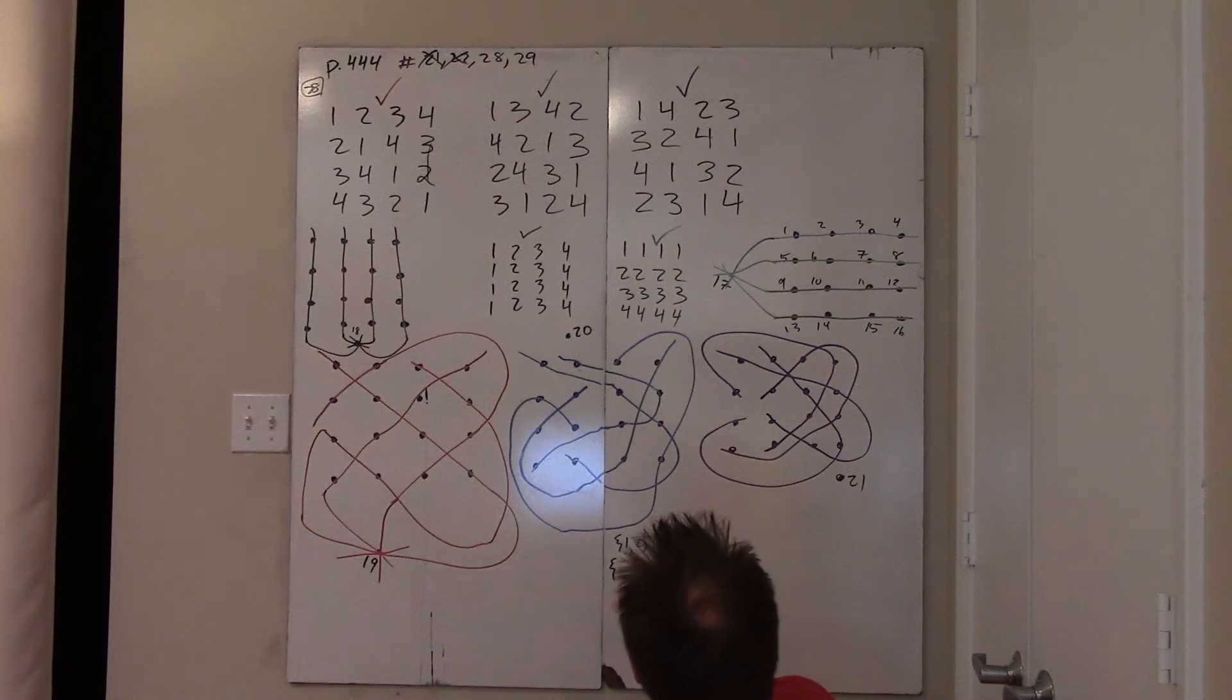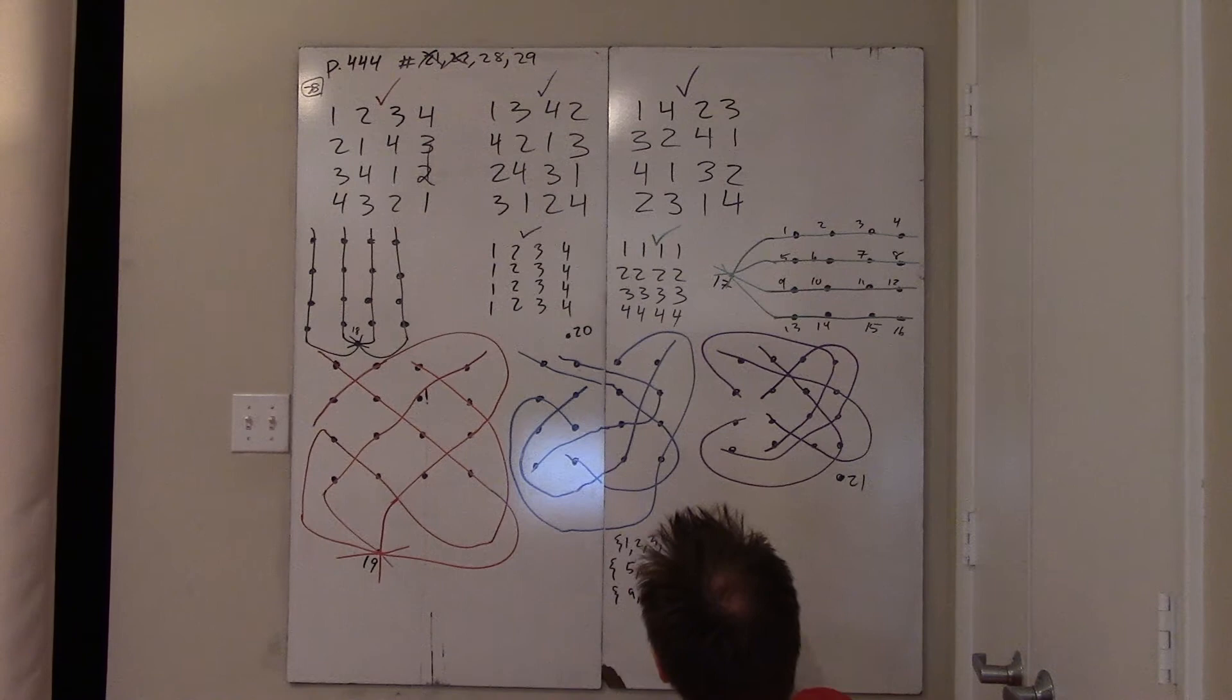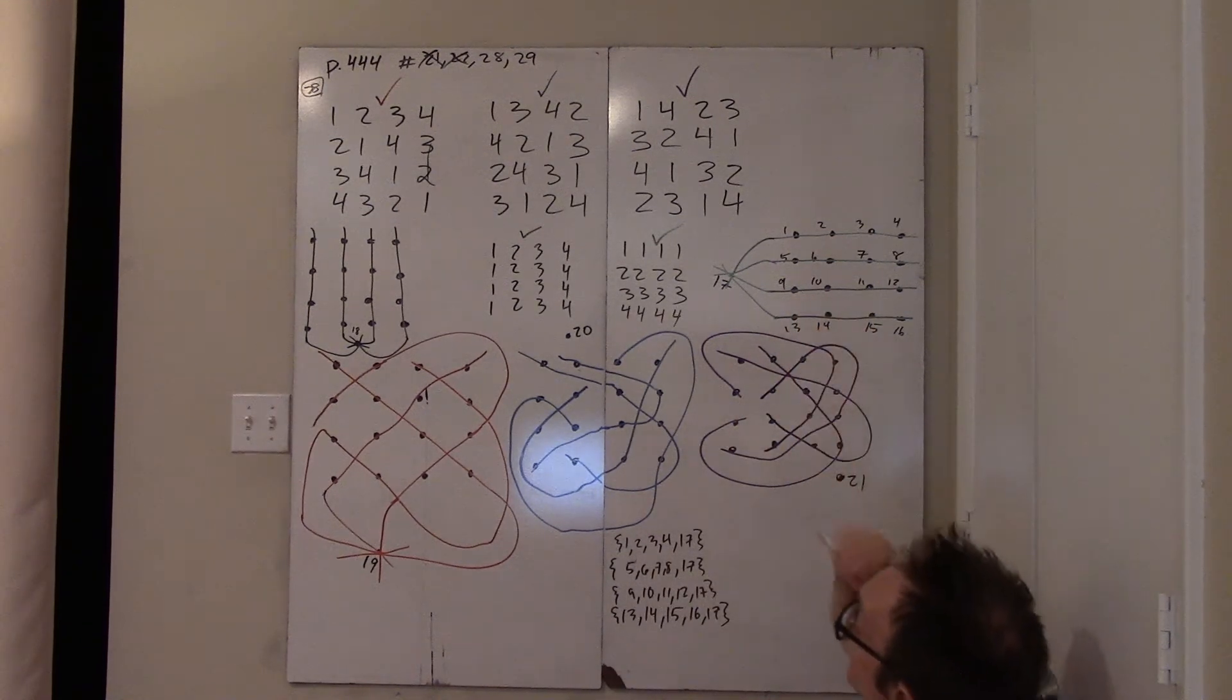Another line is five, six, seven, eight, 17. Another line is nine, ten, 11, 12, 17. Another line is 13, 14, 15, 16, 17. And so that is those four lines, the green ones.